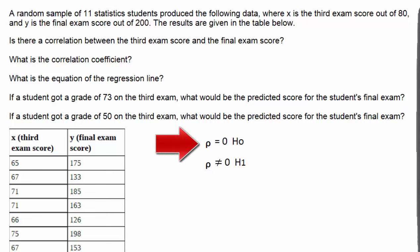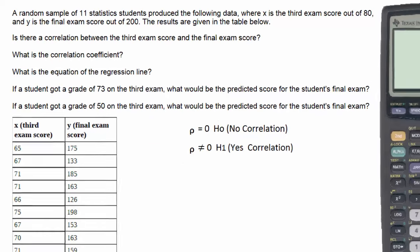If we decide to fail to reject the null hypothesis, then our conclusion will be that there is no correlation. However, if we reject the null hypothesis and therefore support the alternative, then our conclusion will be that there is a correlation. To do this hypothesis test, we'll use the TI-83.